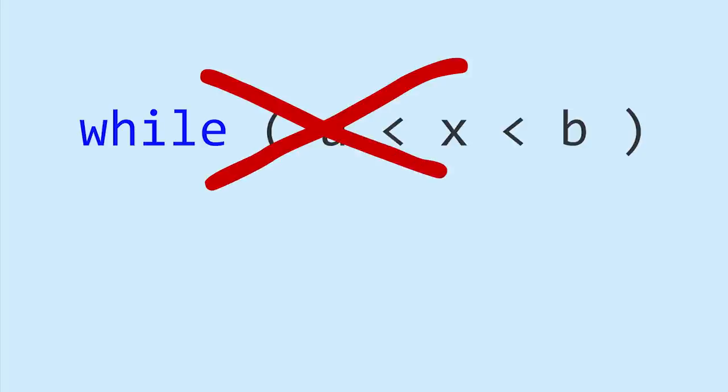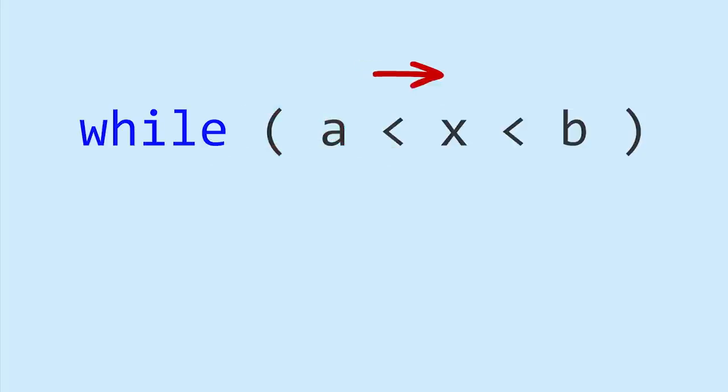Whatever the variable is, the obvious way to check it is like this, but this won't work. When the program executes, the statement will be evaluated from left to right. The first part would become true or false, and then the second part would not make sense anymore.